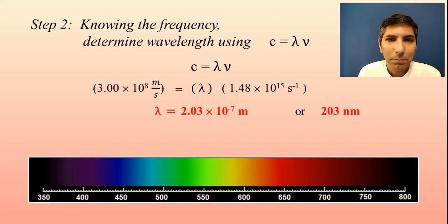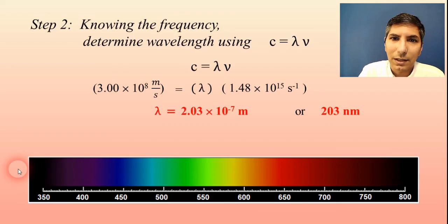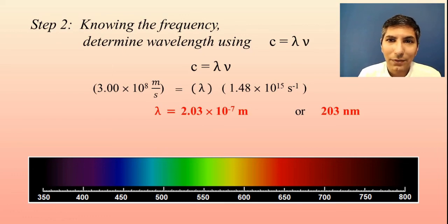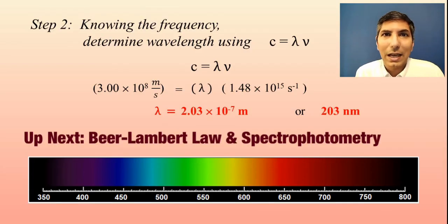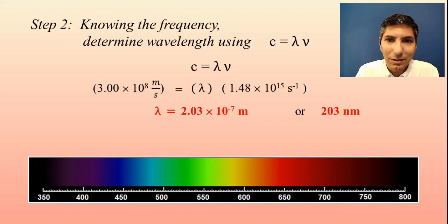If we think about how that would plot on our electromagnetic spectrum, this is the visible light spectrum, and 203 nanometers is a little bit off — it's beyond violet. So this light would be in the ultraviolet range. This is a nice application of a question they might ask on an AP exam about wavelength, frequency, and energy of a photon. I hope you enjoyed this video. Please like and share with somebody in your AP Chemistry class. I'm Jeremy Krug, and I hope to see you in my next video, which will get us started on Unit 3, Section 13 of AP Chemistry.